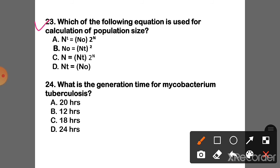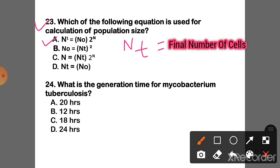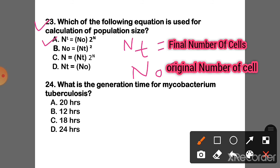Question 23: The correct answer is Option A. The formula is: Nt = N0 × 2^N, where Nt is the final number of cells, N0 is the original number of cells, and N is the number of divisions.